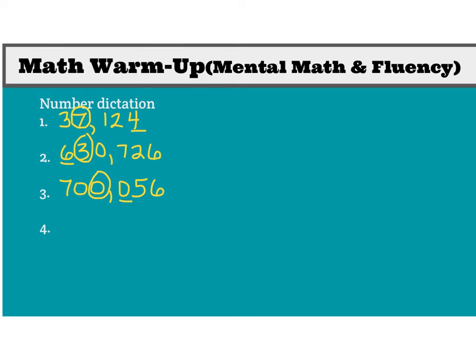Last one, and we're going to make it a doozy. Are you ready? 15,803,021. I'll say that one more time: 15,803,021. I want you to circle the millions digit. Underline the thousands digit.